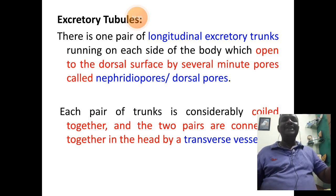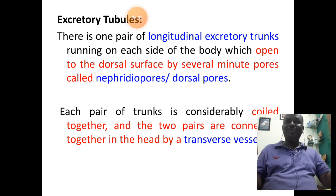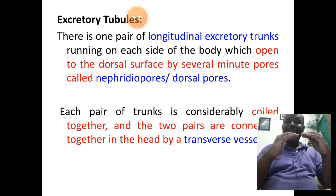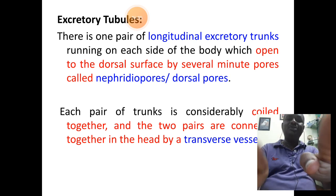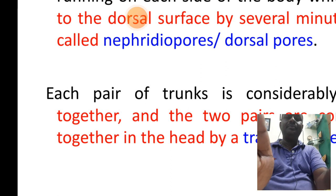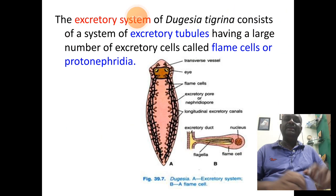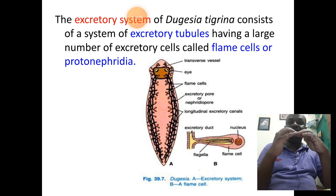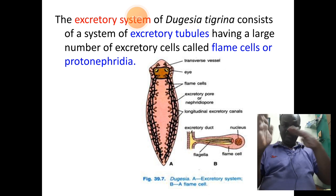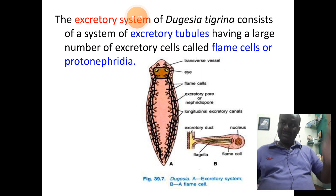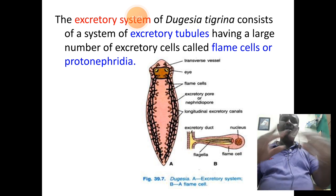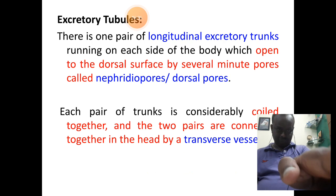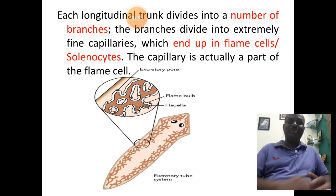The two trunks on the right and left sides of the body are connected with each other at the head region, as seen in the diagram. Both branches of right and left are connected in the head region by means of a transverse vessel. That is about the excretory tubules.